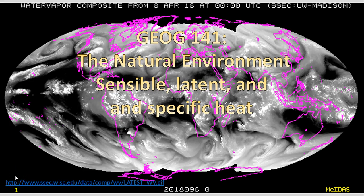Building more on the concepts of heat transfer, this lecture is going to talk about the difference between sensible, latent, and specific heat. In the background is a composite GIF that runs over short time periods, showing water vapor content and how it cycles through the atmosphere. We're going to talk about how these are all tied to water vapor and the change of states of water when discussing these different types of heat.